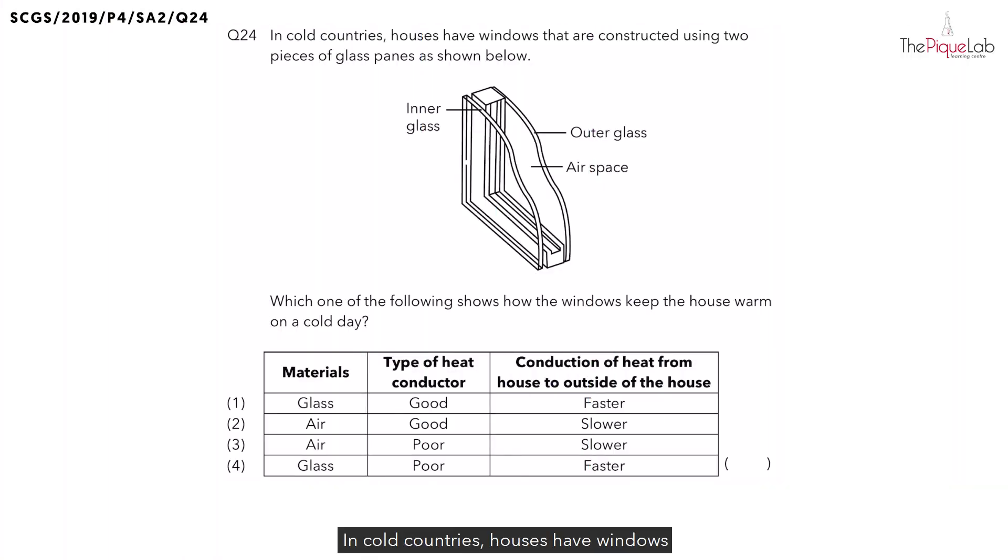Question 24. In cold countries, houses have windows that are constructed using two pieces of glass panes as shown below. Which one of the following shows how the windows keep the house warm even on a cold day?